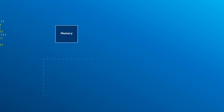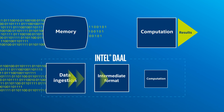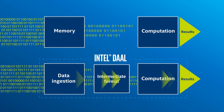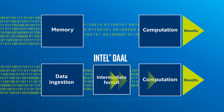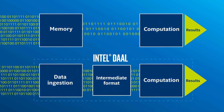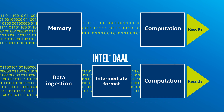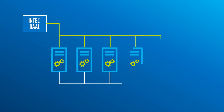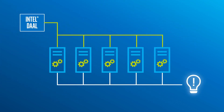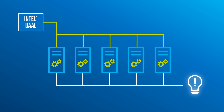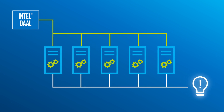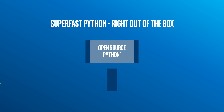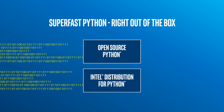Intel DAAL also processes large datasets that won't fit into memory. Data ingestion and computation can execute in parallel to maximize throughput and deliver results sooner. Intel DAAL can also distribute computations across multiple machines on a network, so larger problems can be tackled compared to a single compute node.